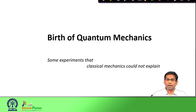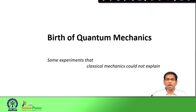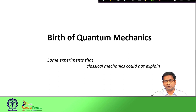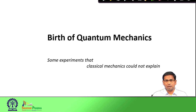The birth of quantum mechanics was not like a smart person on one fine morning deciding to do something revolutionary. Rather, it was a prolonged process. There were experiments after experiments pointing out the lacunae of classical physics. We were unable to explain those experiments with existing knowledge, and at that point quantum mechanics came out as a savior. In today's class, we will discuss some of those experiments that classical mechanics could not explain.